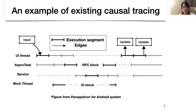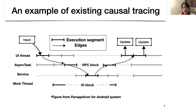To give you some background, causal tracing divides the processing of requests in the system into execution segments in threads. In this figure, each horizontal line stands for one thread, and each execution segment typically represents the execution of some function. An edge represents one segment causing another. The goal is to construct a graph representing causalities among many execution segments over time. For example, the handler of the input event initiates an async task, which then invokes a UI update; similarly, the handler dispatches an I/O request to the work thread, which finishes and initiates another UI update.